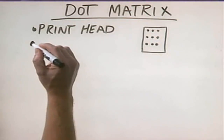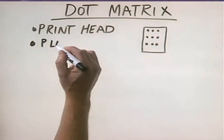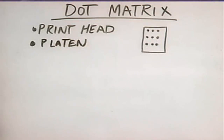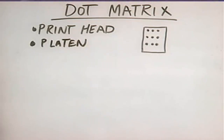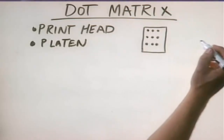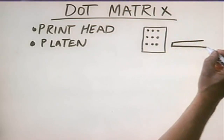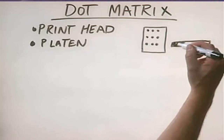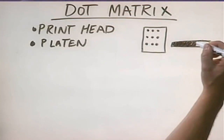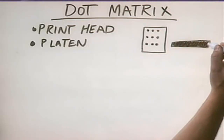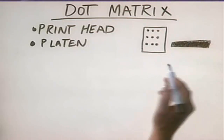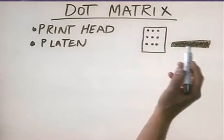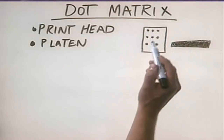In addition to the print head, we also have a component called the platen. If you've ever used a typewriter, you probably already know what a platen is. It's that black roller within the typewriter that you put paper through and roll it around. It's a circular component, like a big cylinder, and its job is to hold the paper in place and serve as a backing to which the print head can hit.